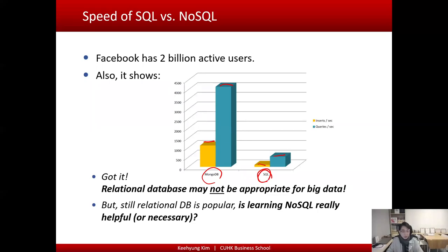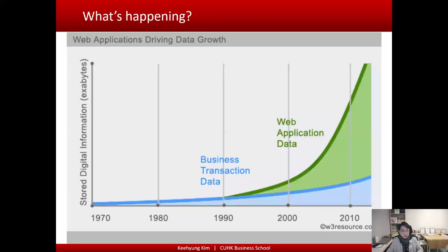But relational databases are still very popular in the real world — many companies still use them. Is learning NoSQL really helpful? This graph shows the type of data we're dealing with in the real world and how it has changed from 1970 to 2025. Until around 1999, all the data we dealt with was business transaction data — which is why relational database systems and database architectures were originally developed.